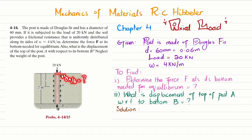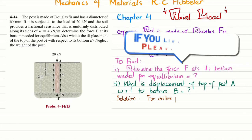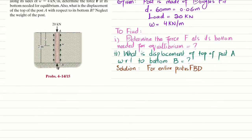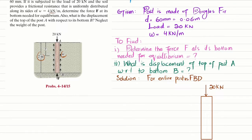Let's start with the solution. First, we take the entire post as a free body diagram. So we have the post with a 20 kilonewton load at the top, and at the bottom we need to find force F for equilibrium. The uniformly distributed load along the side, when converted to a point load, is w times the length: 4 kilonewton/m times 2 m = 8 kilonewtons, acting at the middle of the post.